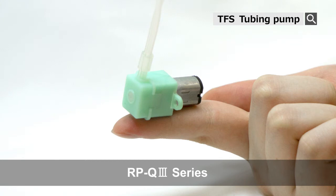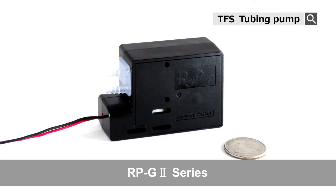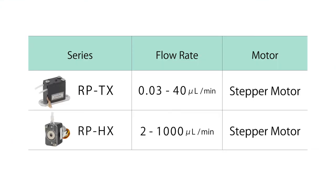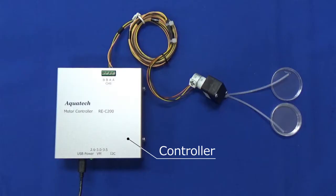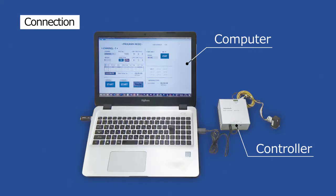In addition, we have other series like RP-Q3, RP-C3, RP-G2, and RP-M. Besides DC motor drive, pumps with a stepper motor driver are also available for adjusting a more precise flow rate, like the RP-TX and RP-HX series. If a driver or controller is necessary for stepper motor type pumps, we do offer controllers separately as well.